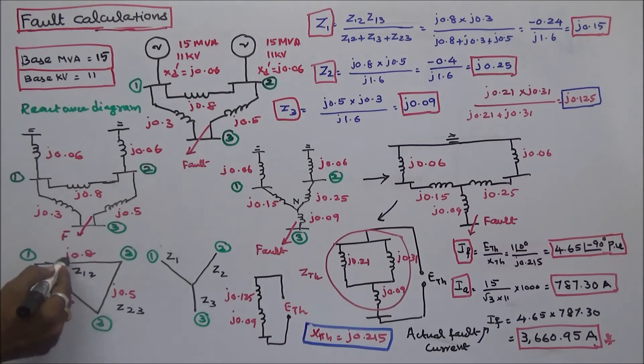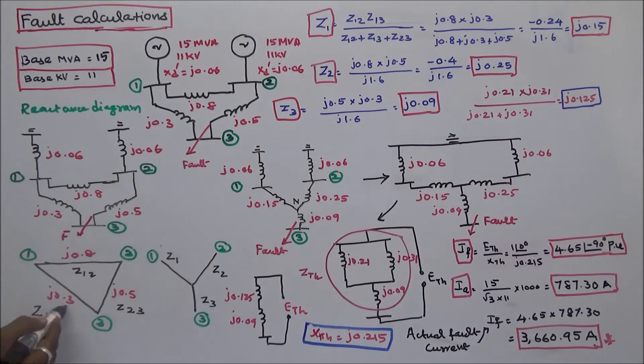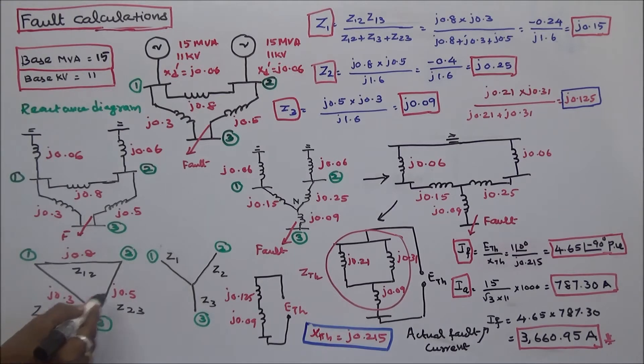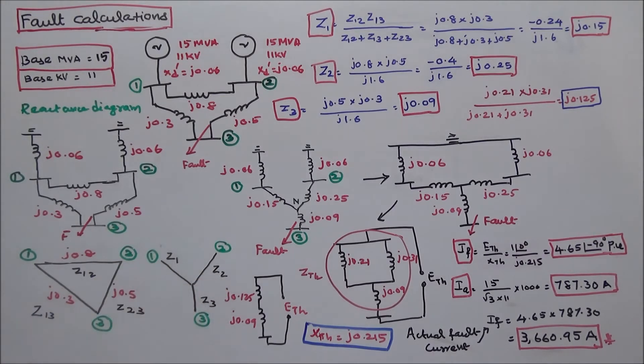In the delta configuration: Z12 is equal to J0.8, Z23 is equal to J0.5, and Z13 is equal to J0.3. We now need to calculate the star equivalents Z1, Z2, and Z3, where the neutral point is the reference.